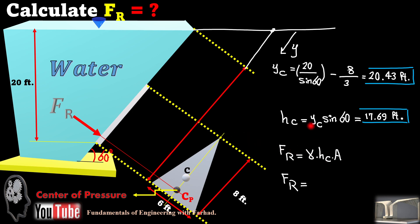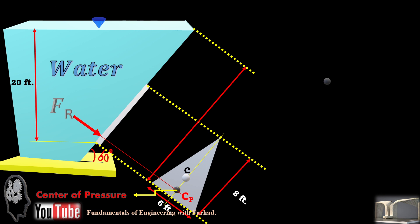It just depends on the height of centroid and that's gamma times h sub c times the area of our triangle. So, that's gamma of water in British unit is 62.4 pound per feet cubed times h sub c we just replace from here and the area of our gate is a half of six feet times eight feet. So, f sub r, the resultant force is equal to 26,500 pounds.